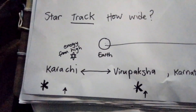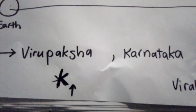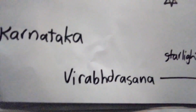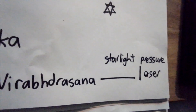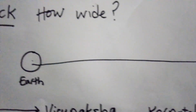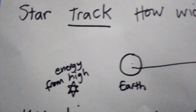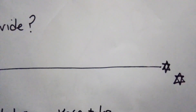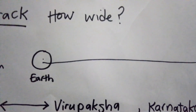So if we look at the code in Virupaksha, Karnataka, because AAAA is stars and we've got Virupaksha — that's starlight pressure and lasers. And this is like laser light through this, like a brick wall of nodules that the universe creates with starlight rhythms on an electronic wavelength.